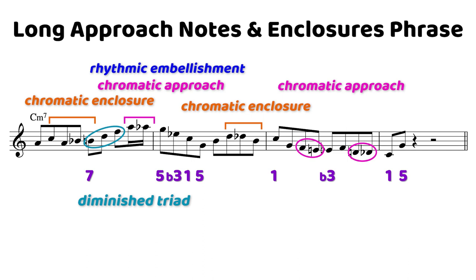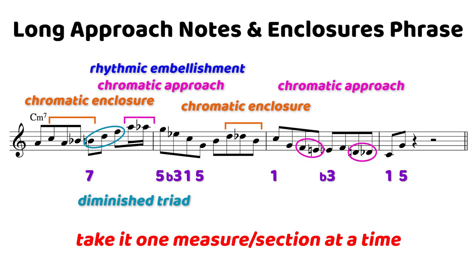Now what you can do in order to better break down this phrase, especially when you're going to transpose it, is actually just take it one measure at a time. If you wanted to, you could take it one section at a time — perhaps two beats where you feature one set of chromatic approach notes or one set of chromatic notes that form an enclosure. What you'll notice by doing this is that your muscle memory will recognize the chromaticism, because there are only so many ways you can chromatically approach and chromatically enclose a single note.